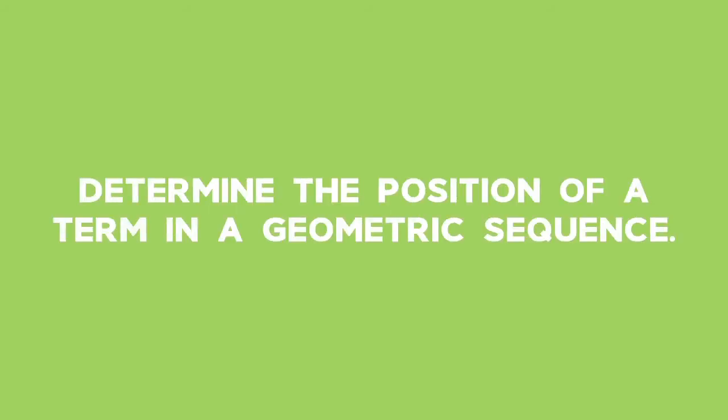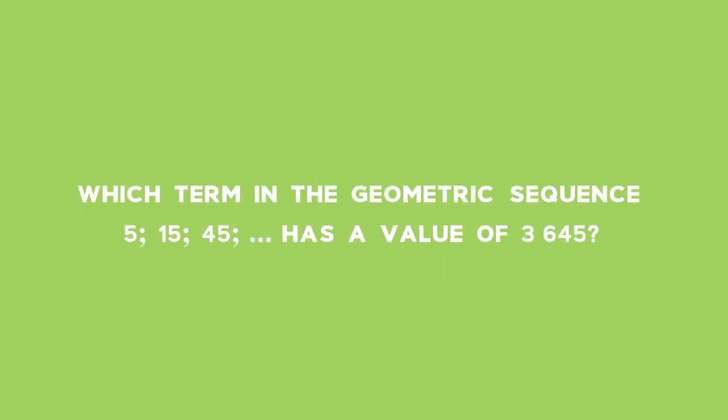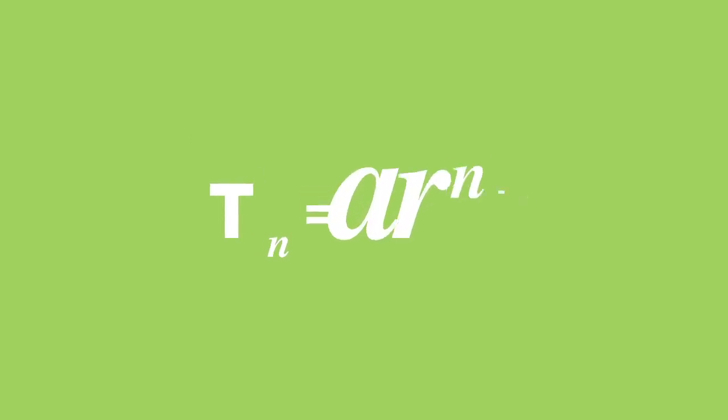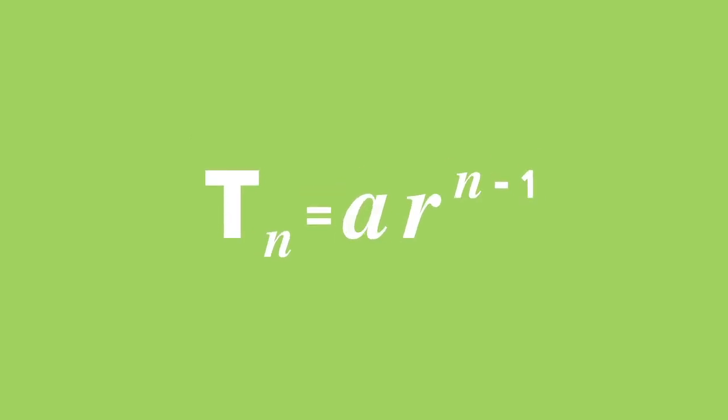Example 2: Determine the position of a term in a geometric sequence. Which term in the geometric sequence 5, 15, 45, and so on, has a value of 3,645? Solution: We know we are dealing with a geometric sequence, therefore there will be a constant ratio. We need to find the position of the term with the value of 3,645 in the sequence.